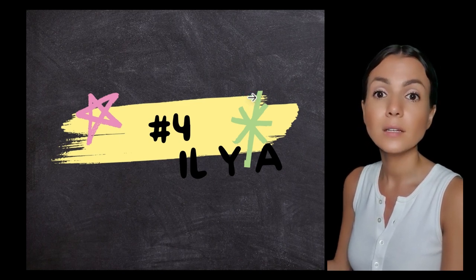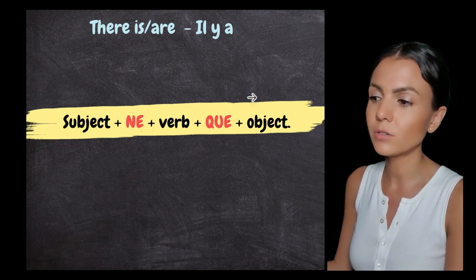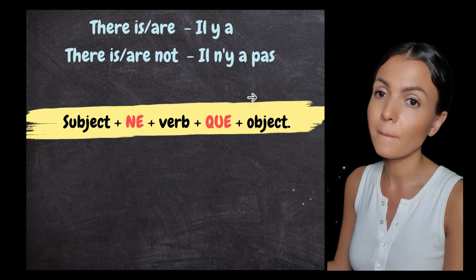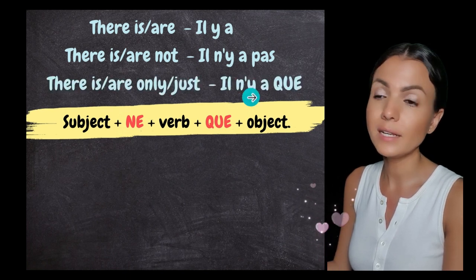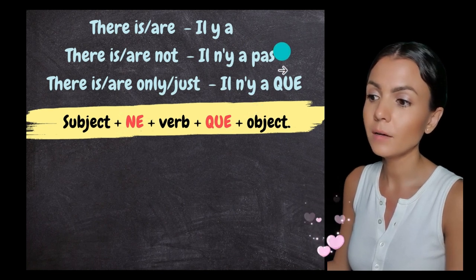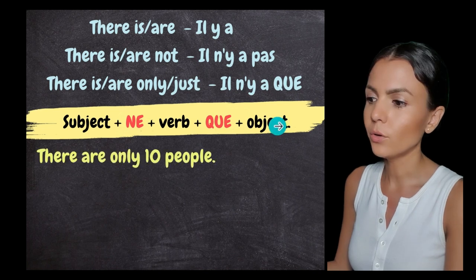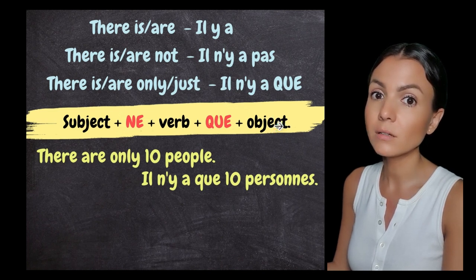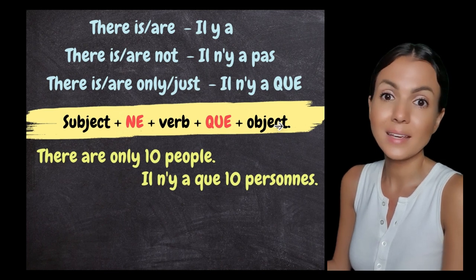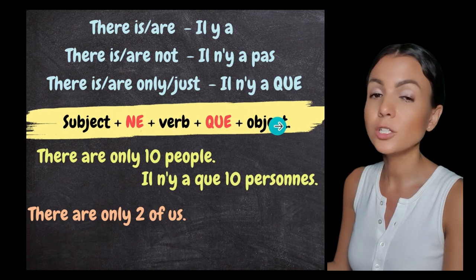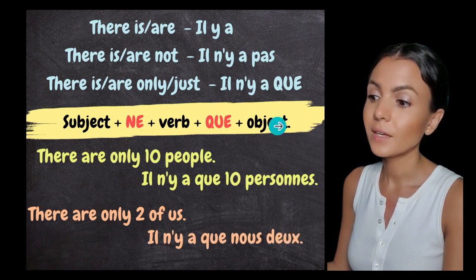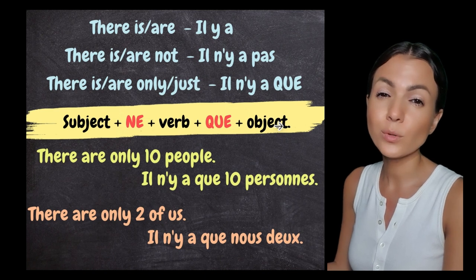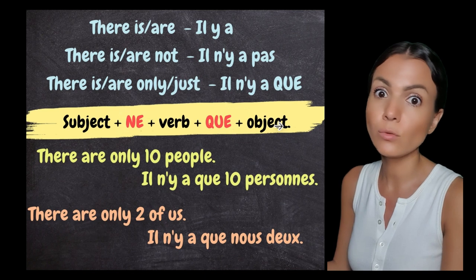Case number four — 'il y a', which means 'there is/there are'. Make it negative: 'il n'y a pas'. Then replace 'pas' with 'que': 'il n'y a que' — 'there is/are only'. For example: 'there are only 10 people' → 'il n'y a que dix personnes'. 'There are only two of us' → 'il n'y a que nous deux'. In spoken French, you might just hear 'y a que nous deux', dropping both 'il' and 'ne'.